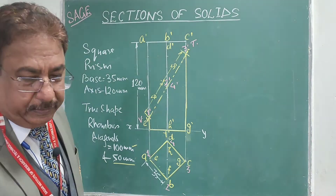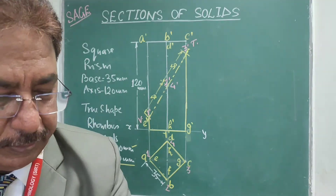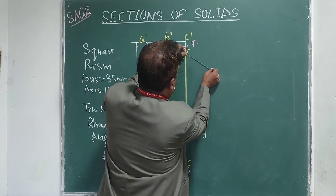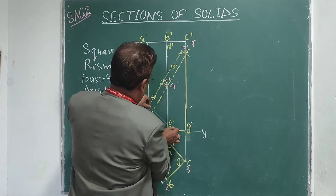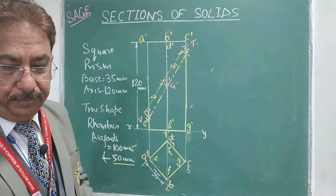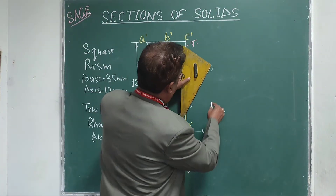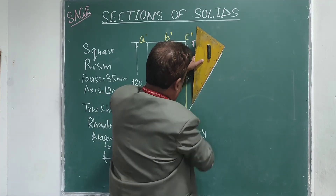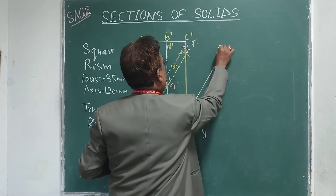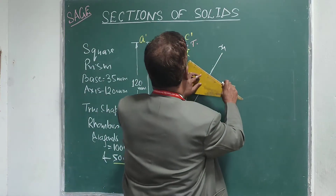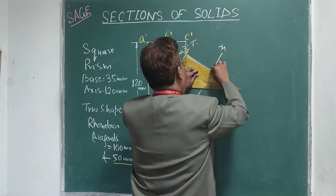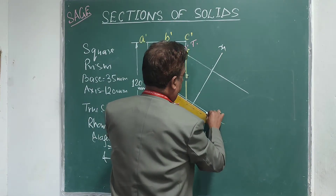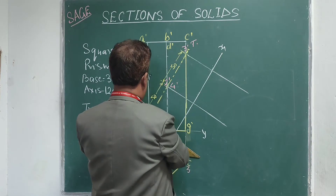To get the true shape of the section, we draw a new reference line parallel to the cutting plane. Drawing another reference line parallel to the cutting plane — that is my X1Y1 — and I will project points 1, 2, 3, and 4 onto it: from 1, then from 2 and 4, and finally from 3.